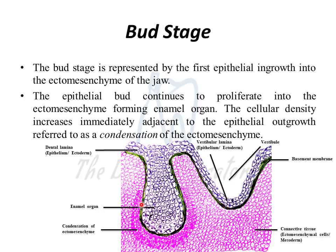As the tooth bud ingrowth has grown, it is given a new name: the enamel organ, which basically leads to the formation of enamel — the outermost tissue of the tooth structure. The enamel organ is the ingrowth of the dental lamina, which was epithelial in origin, so the enamel organ is also epithelial in origin. Therefore, any structure produced by this enamel organ is also epithelial in origin — that is why we call enamel epithelial in origin.